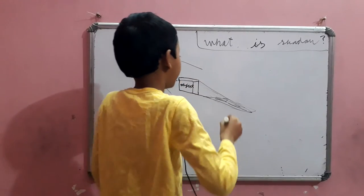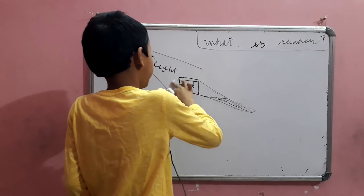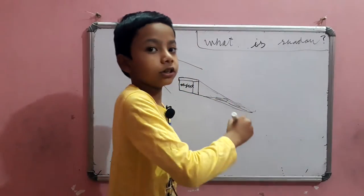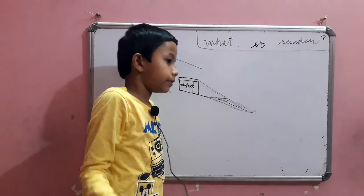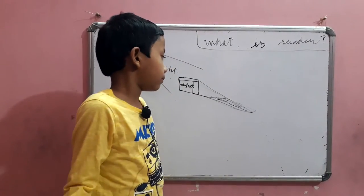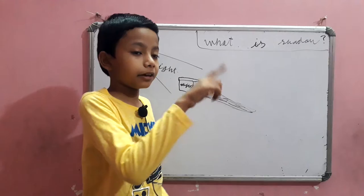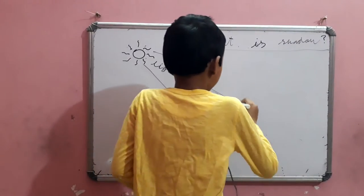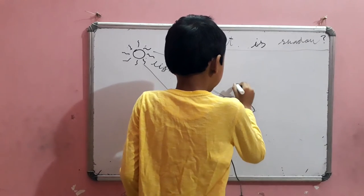So, what did the light do now? Now, behind the object, it creates a dark image that looks the same as the object, but it's flat because it's on the ground. We call it shadows.